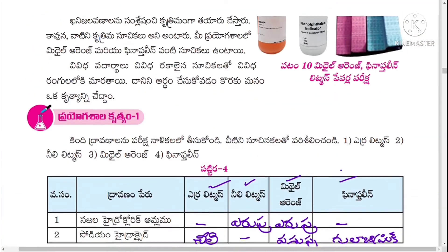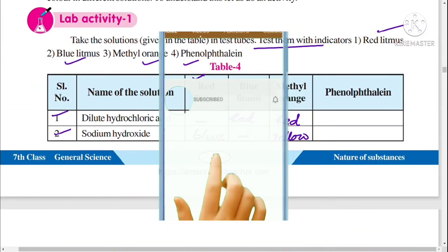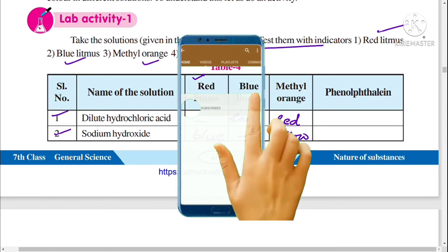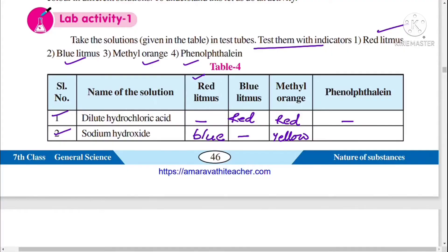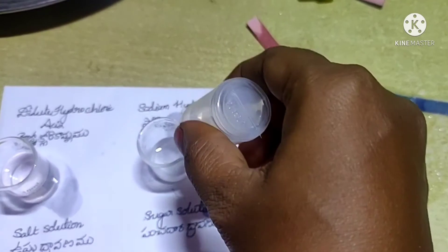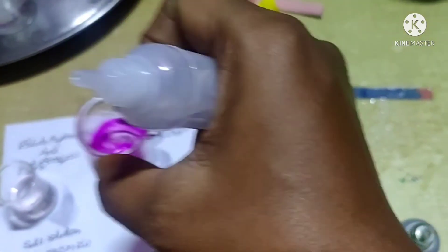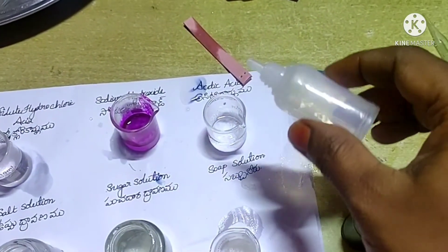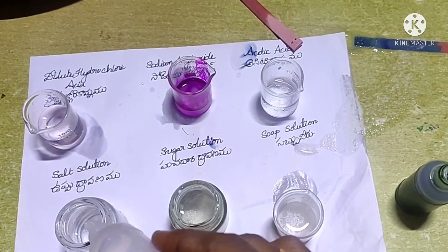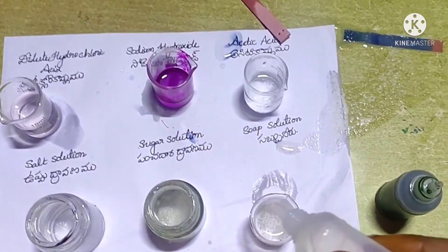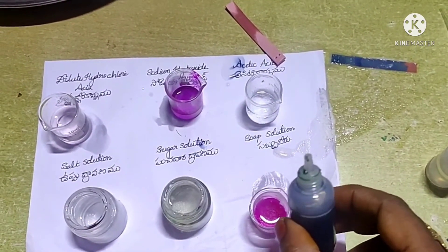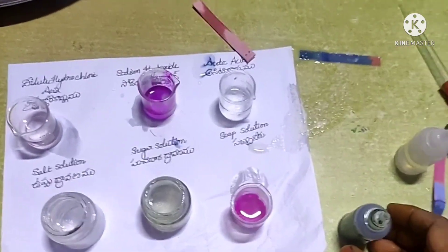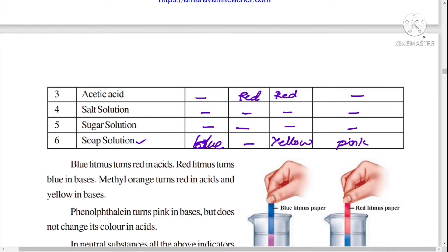The next indicator is phenolphthalein. Pour two to three drops of phenolphthalein solution into dilute hydrochloric acid — it does not change its color. Add few drops of phenolphthalein to sodium hydroxide solution — it will turn pink. Add few drops of phenolphthalein into acetic acid solution — it does not change its color. With salt solution, it does not change its color. With sugar solution, it does not change its color. With soap solution, it will turn pink. So phenolphthalein changes to pink color with base solution, but does not change its color with neutral solutions and acidic solutions.